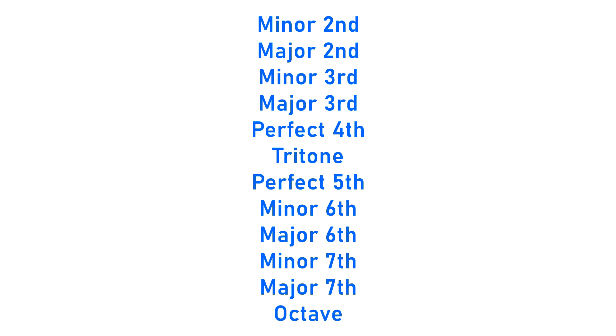Without going beyond the octave, and staying within Western music, there are 12 different intervals — 12 different potential gaps between two given notes — and each of these intervals has names like the perfect fifth, the minor third, the major seventh. To recognize those intervals just by hearing them, you could listen to a bunch of them and try to get used to the way they sound. But something that works really well in tandem is to associate each of the 12 intervals with a famous melody that uses that interval.